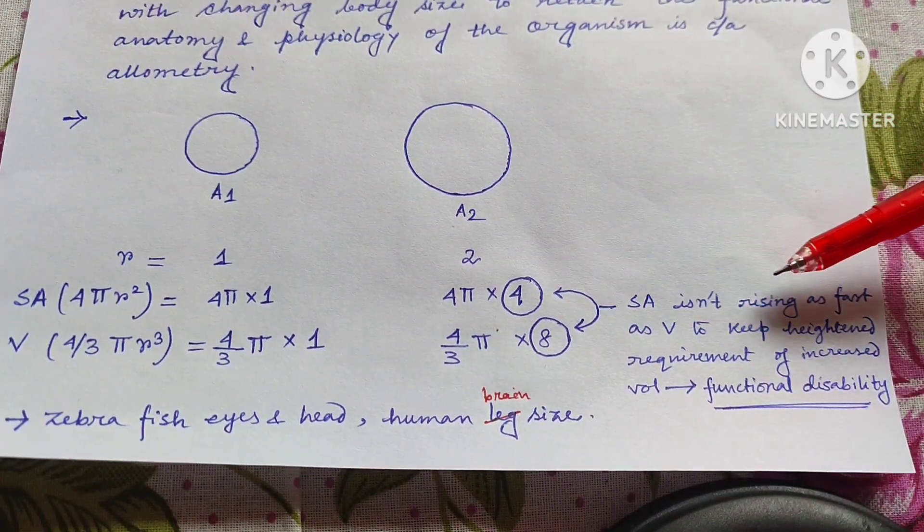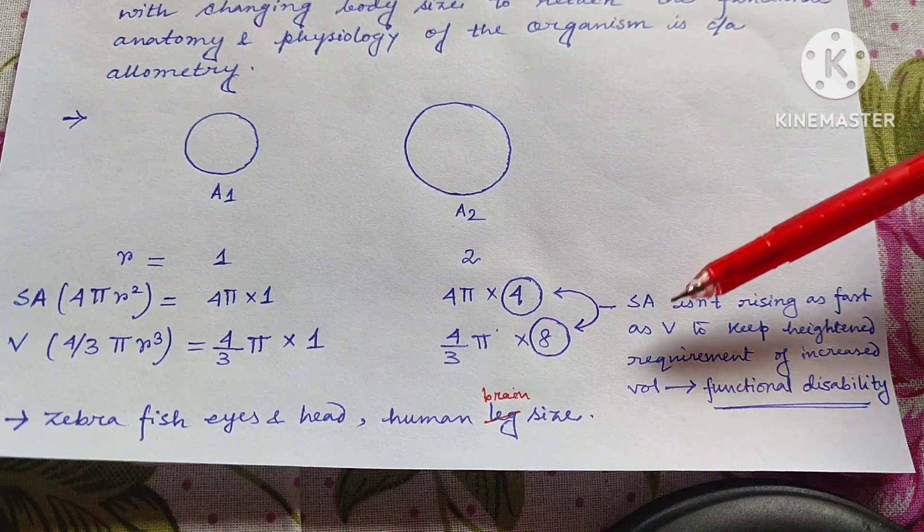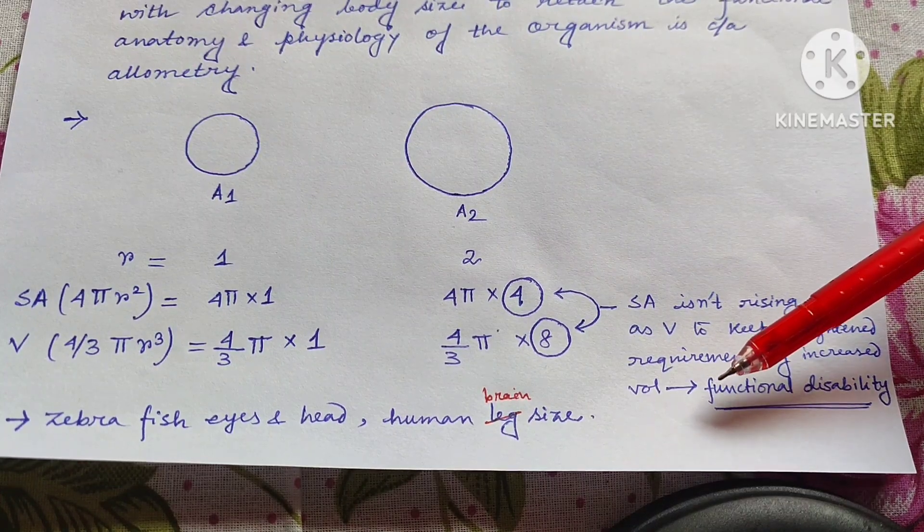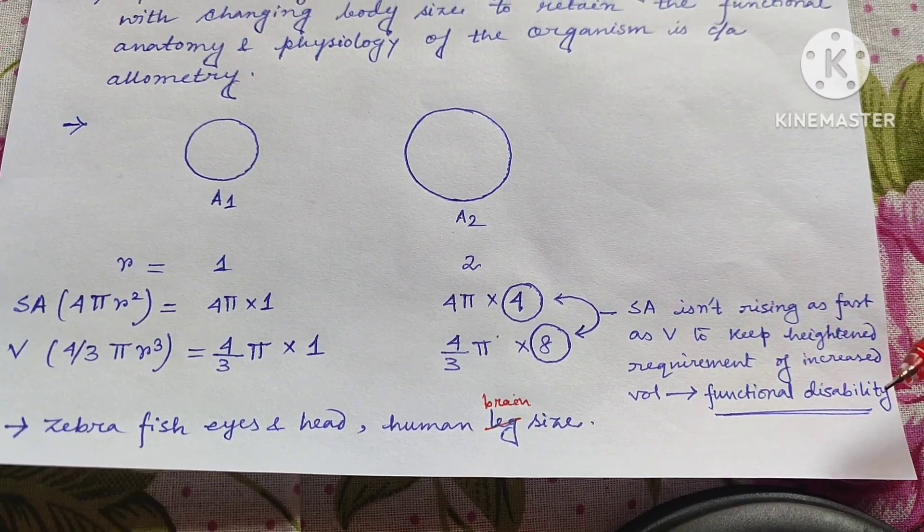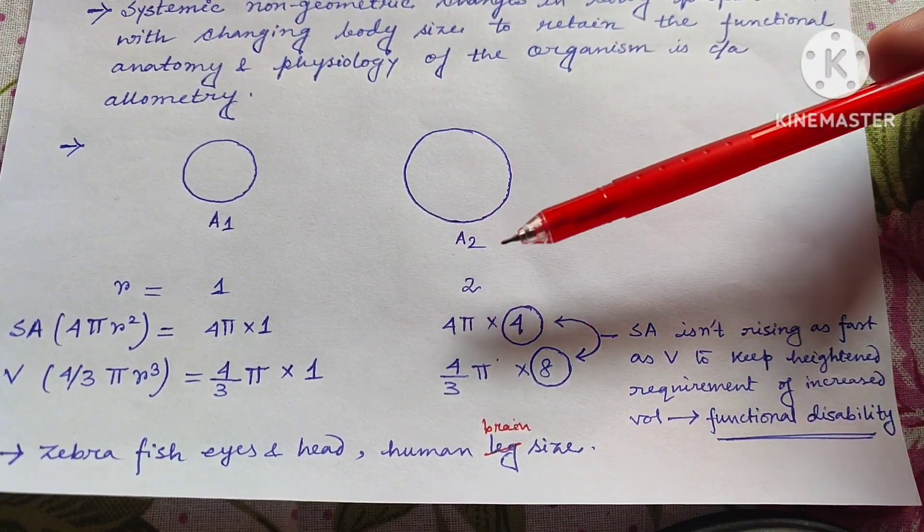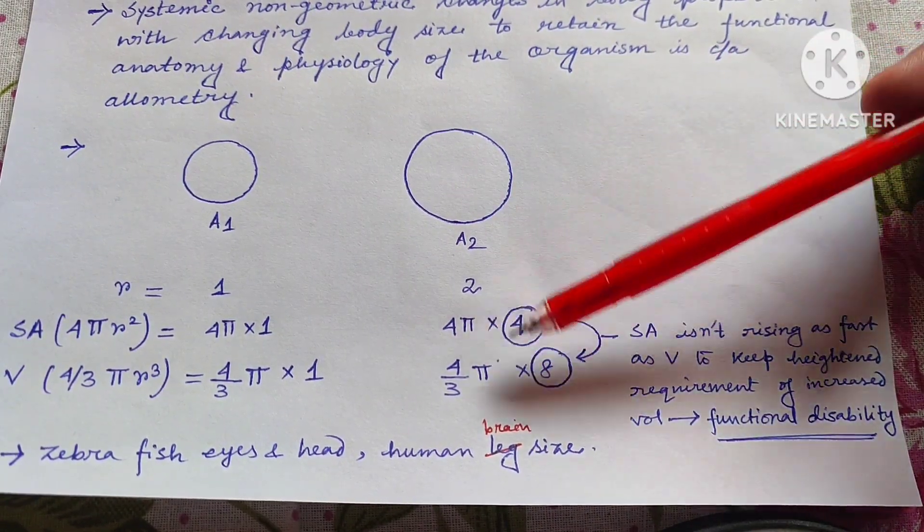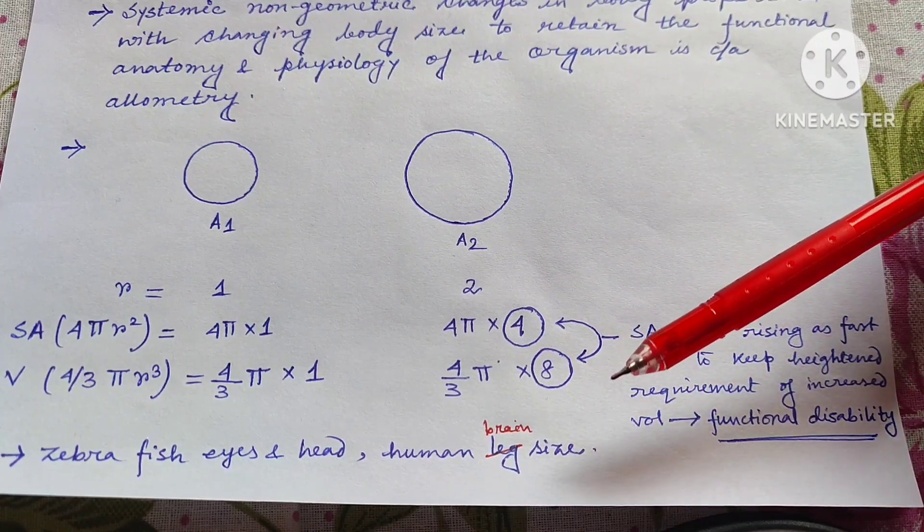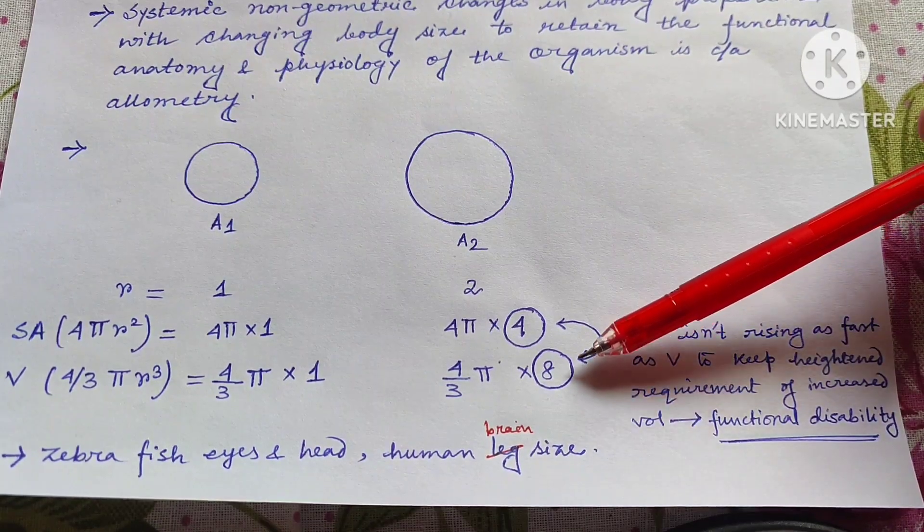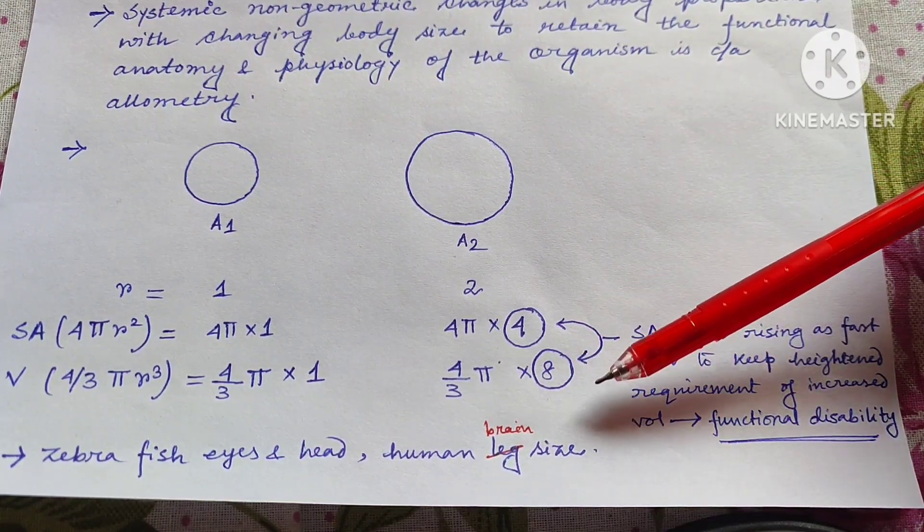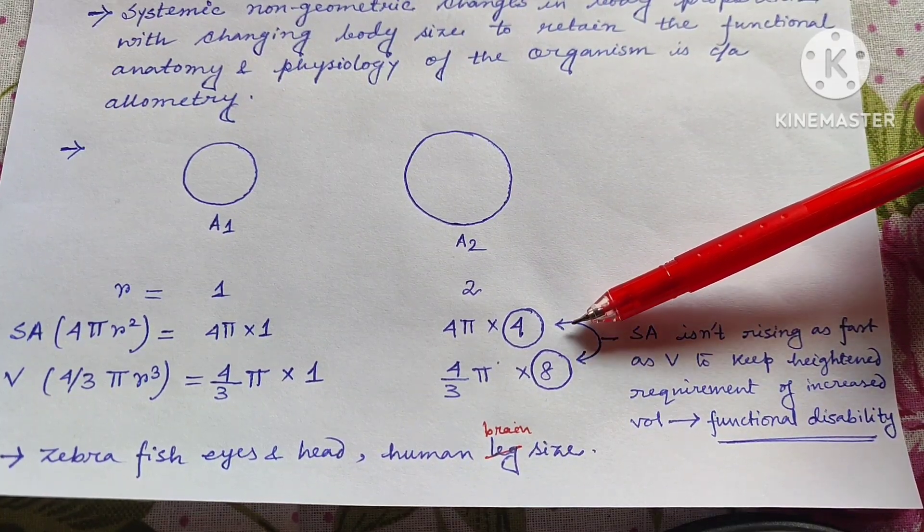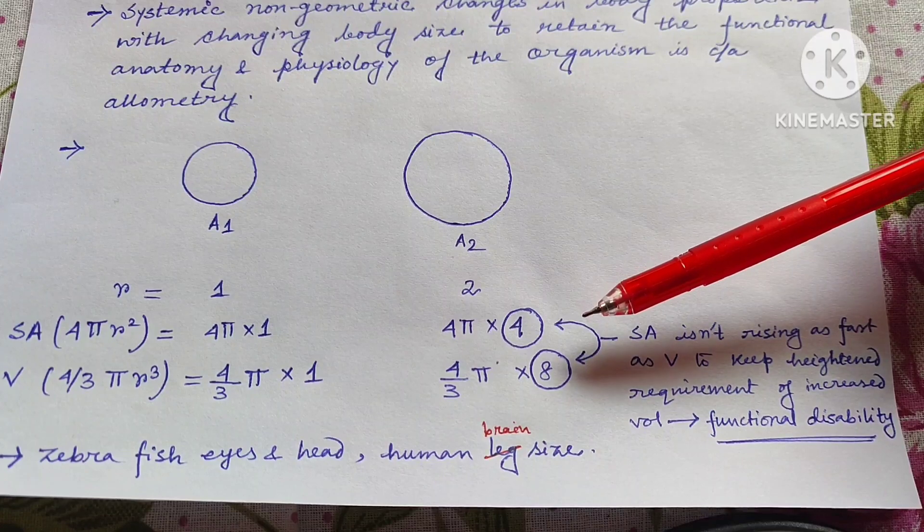So this surface area is not rising as fast as the volume to keep the heightened requirement of the increased volume which leads to functional disability. What does this mean? That means the overall size has increased, the overall volume has increased 8 times. So to meet the required amount of nutrition of this increased size you need to increase the surface area accordingly.